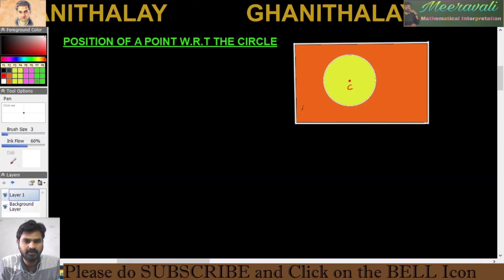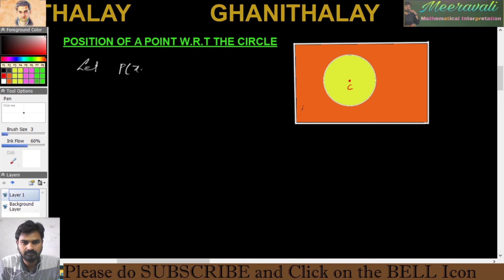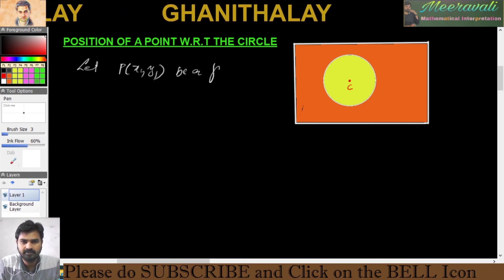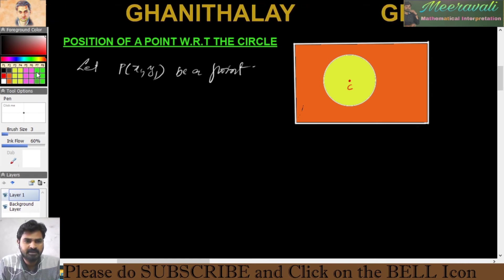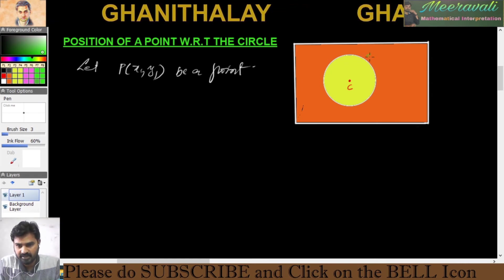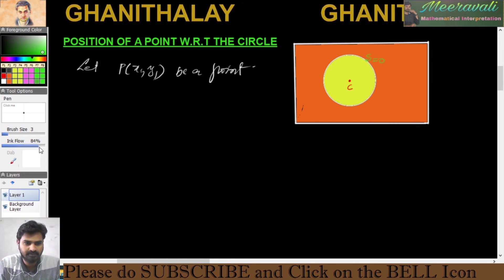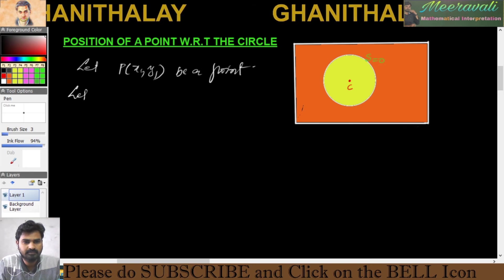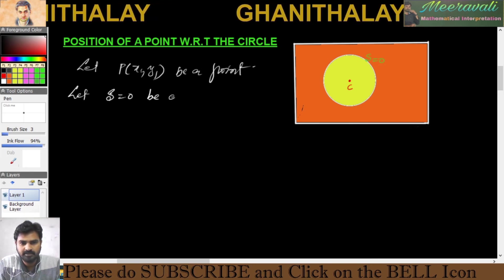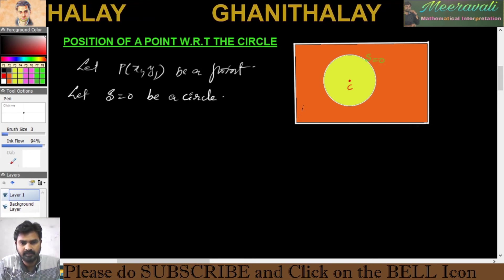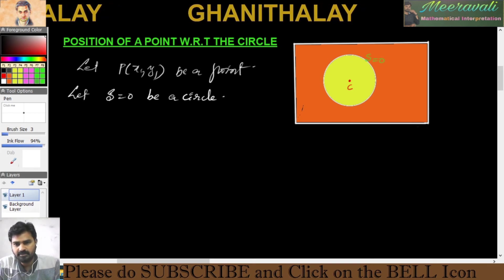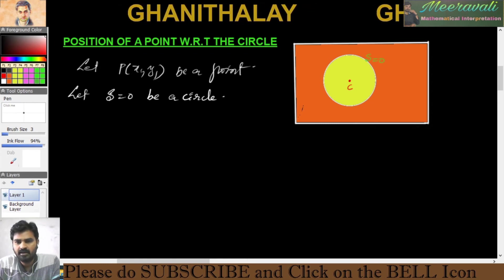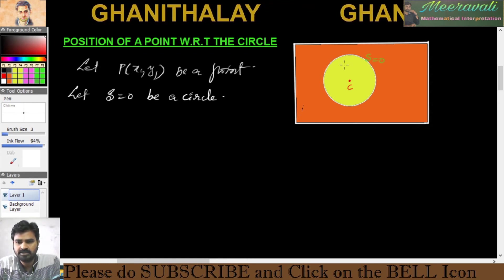Now let us take the point P(x1, y1) and the circle S equals zero. The position of a point means whether the given point lies outside, inside, or on the circle. We have to decide whether the given point lies on the circle, containing the center — which is interior — or exterior.